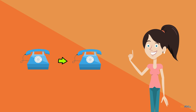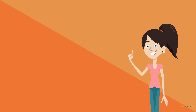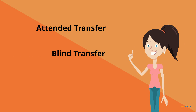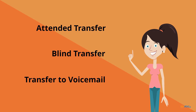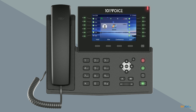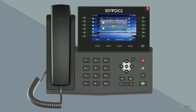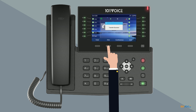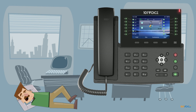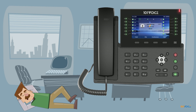If you wish to transfer a call to another party, you have three options: attended transfer, blind transfer, and transfer to voicemail. For the attended transfer, while the first party is on the phone, press the transfer soft key. Dial the number or extension for the second party, then press the dial soft key. When the second party answers, notify them of the transfer, then press the transfer soft key to complete the transfer. If the second party does not answer or is unable to accept the transfer, press end, then resume to return to the first party.